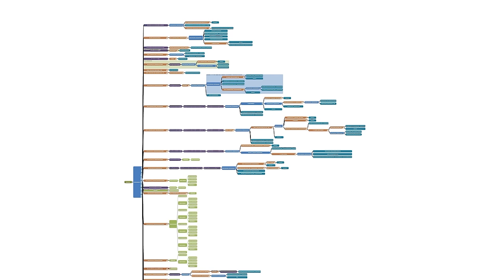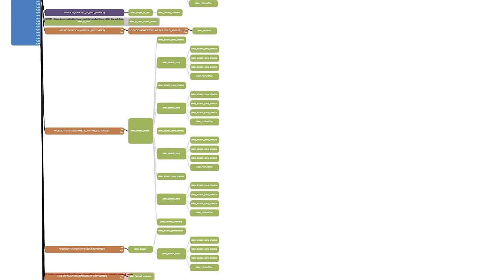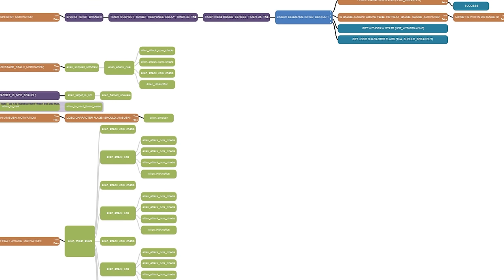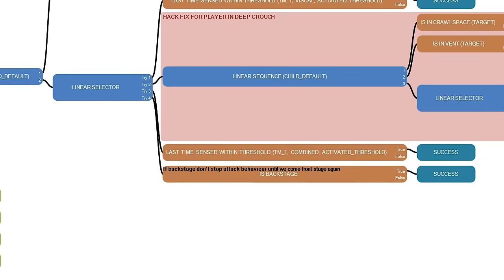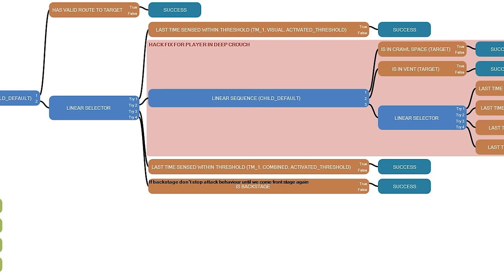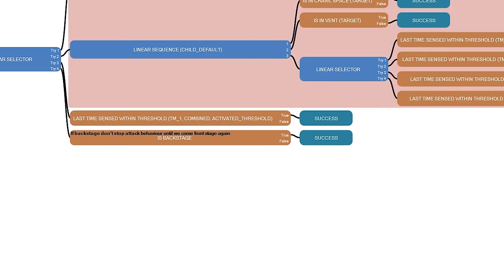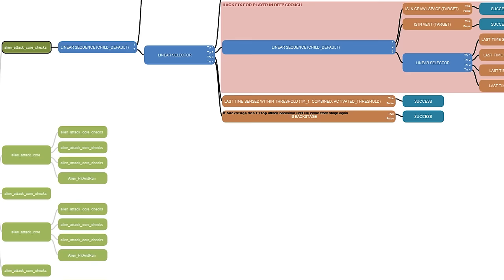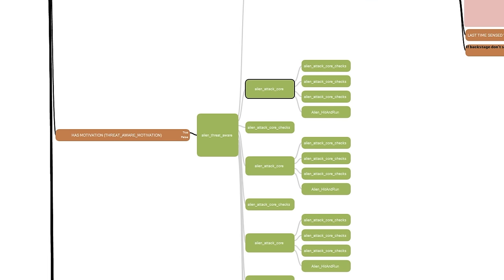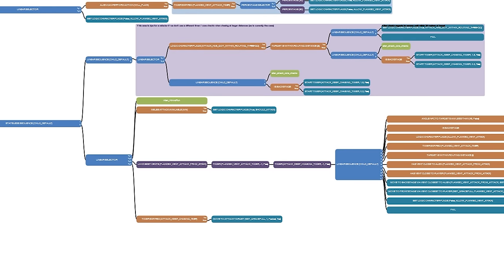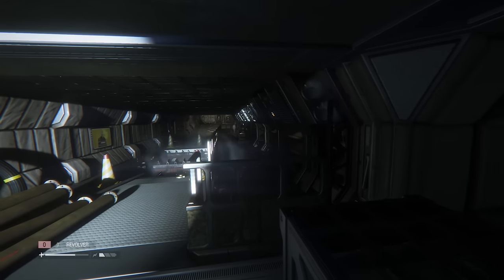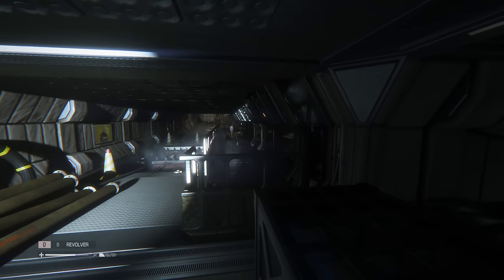However, it might be a little hard for you to see in the video. The Xenomorph has 36 branches it can take from the root of the tree. This ranges from attacking the player to investigating disturbances that its sensors have detected, climbing in and out of vents and fleeing from fire, but also some special tools and other secrets that hint at cut content from the game.